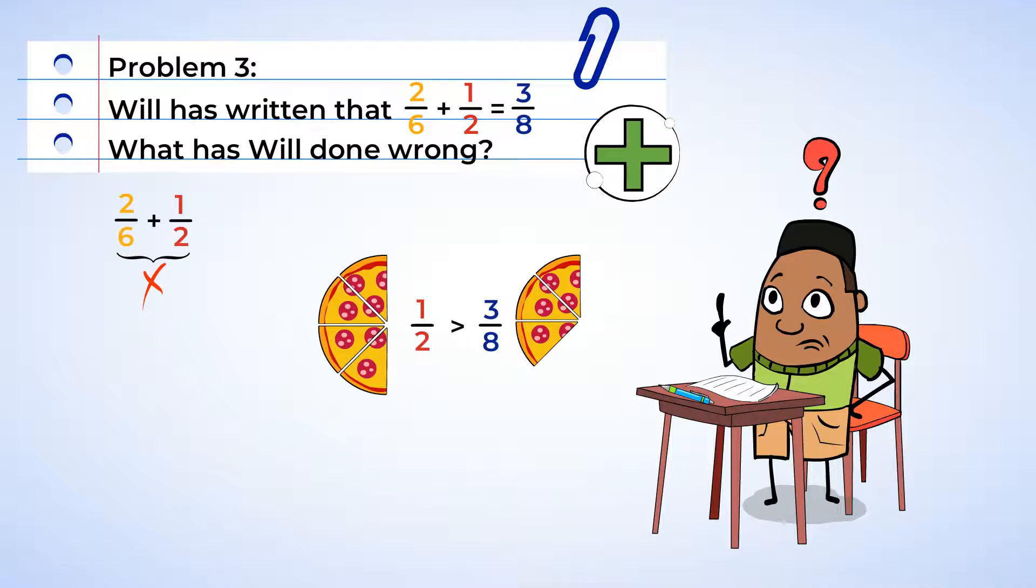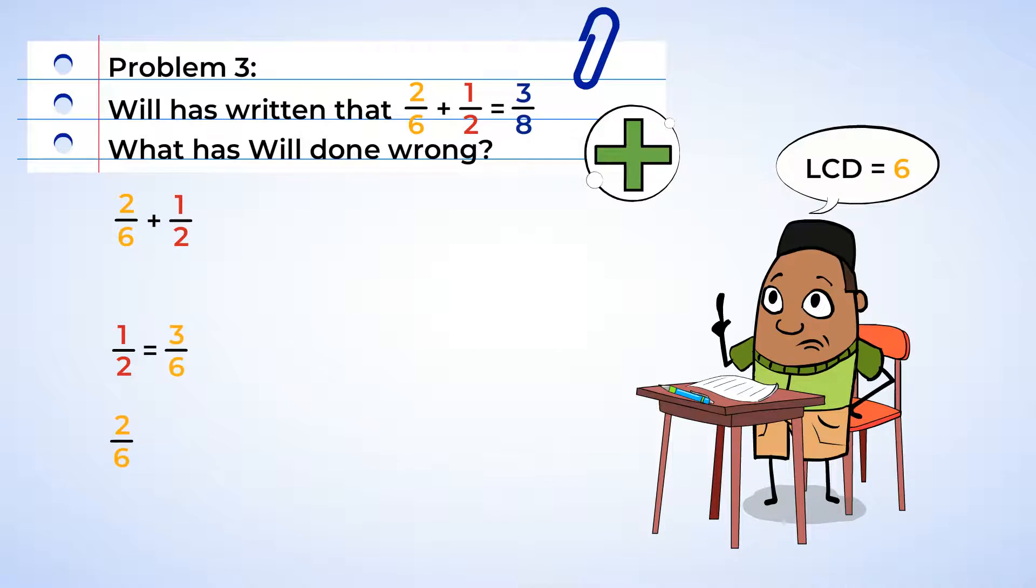So it looks like Will added both fractions without finding a common denominator first. Good detective work. We can fix this. We can use a common denominator of six, as two is a factor of six. So one half is equal to three sixths. Now, two sixths plus three sixths is equal to five sixths. And there you have it. Five sixths is the right answer here.